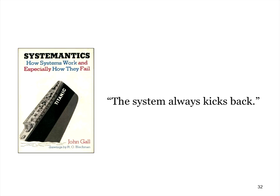The folks in systems thinking know all about these unintended consequences. There's a great book by John Gall called System Antics, and his memorable quote is: the system always kicks back. I think of Airbnb and Uber as examples — all the lawsuits that surround those two Silicon Valley startups. When you introduce an innovation that really changes the landscape, at some point the system is going to kick back. In some cases, you end up going in the opposite direction than you intended.